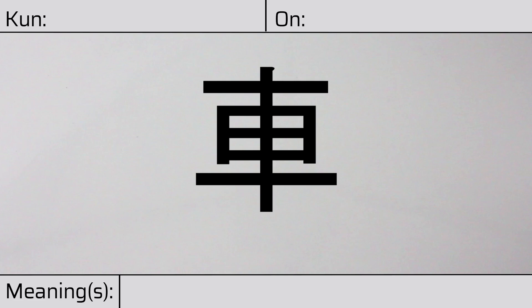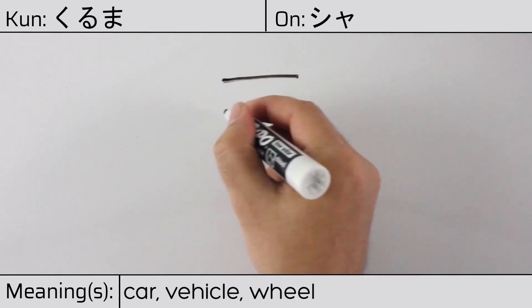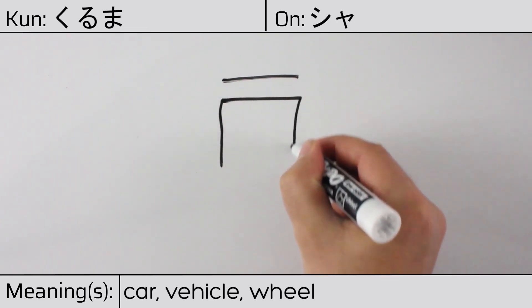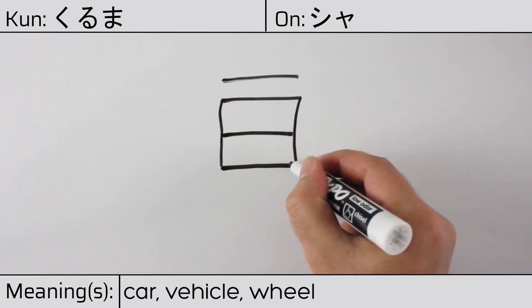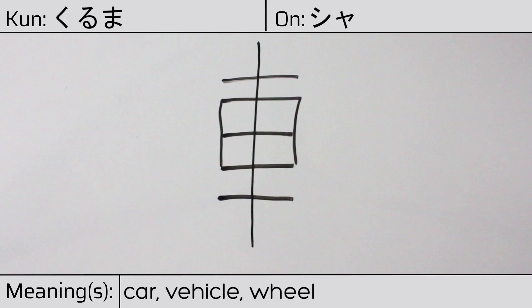Welcome to this lesson on Japanese kanji. Today, we'll be discussing this character. This kanji has kunyomi or Japanese reading of kuruma, and it has an onyomi or Chinese reading of xia. This character has the meanings car, vehicle, or wheel. Here is the stroke order.